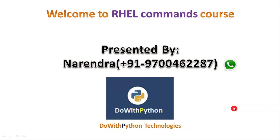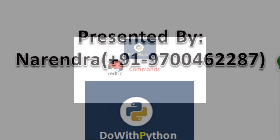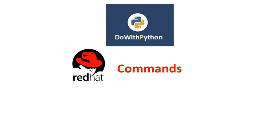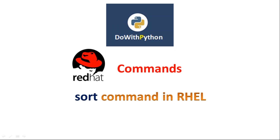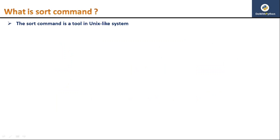Hi friends, welcome to RHL Commands course video series presented by Narendra from Do with Python Technologies. In this video we are going to see how to sort lines in your text file based on either alphabetical order or numerical order. For that we have the sort command in Unix/Linux systems. The sort command is a tool used to sort lines based on alphabetical order or numerical order.